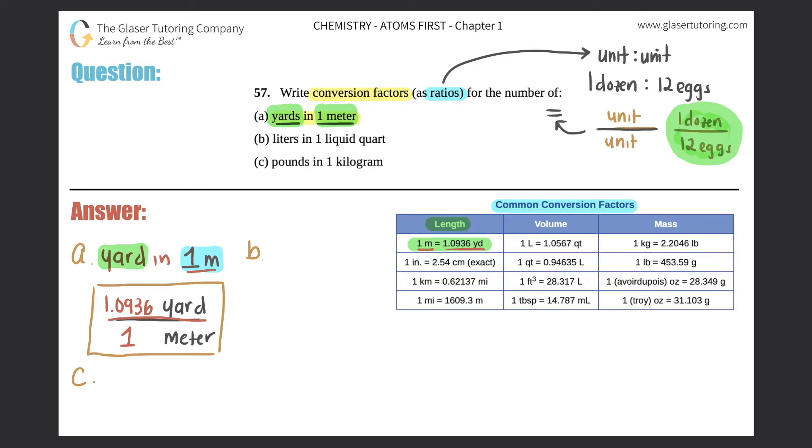Letter (b): liters in one liquid quart. So we got to be super specific. They said liters first, which means that that goes on the top, and one liquid quart goes on the bottom. So I'm going to start my ratio: liters has to be on top because I said it first, and I'll say liquid quart qt on the bottom.